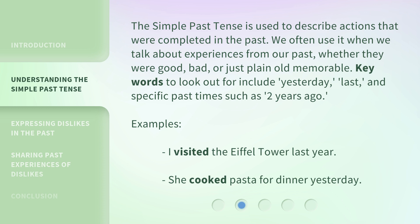Key words to look out for include: yesterday, last, and specific past times such as two years ago. Examples: I visited the Eiffel Tower last year. She cooked pasta for dinner yesterday.